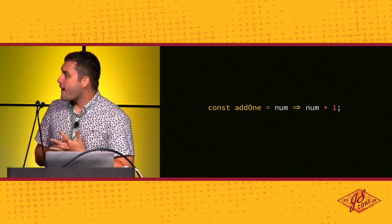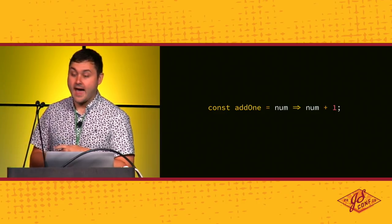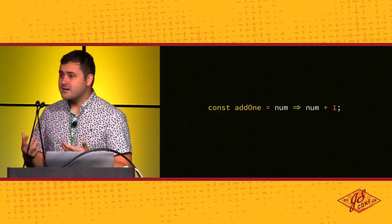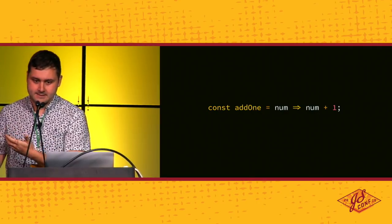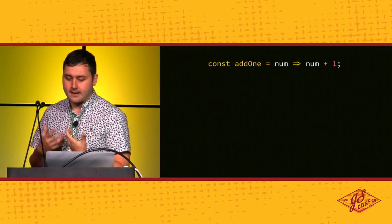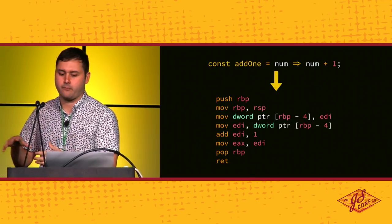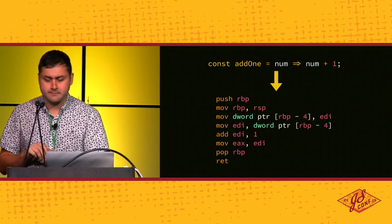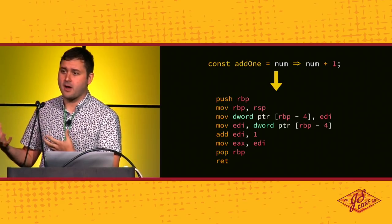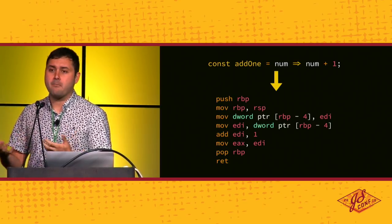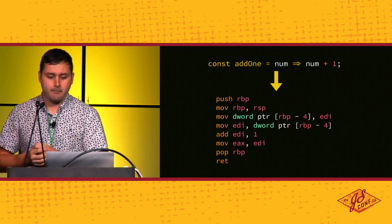For instance, in the browser, you can write something like a super simple add-one function. What the browser has to do before it can actually execute this function is parse and compile it into something that's much more low level — something that can actually run on top of a CPU. It's the browser's ability to do this just-in-time compilation that has made the web a viable platform for building very sophisticated applications.